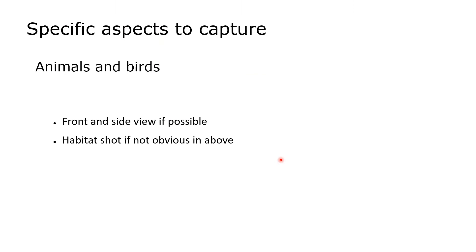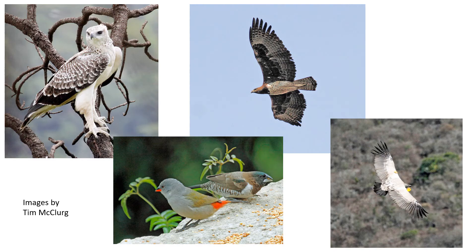For animals and birds, try to get a front and side view if possible — clearly not always possible as these things don't move to order — and maybe a habitat shot if not obvious. Here we have nice images of raptors and some garden birds. In this case you would want to split the observations so you have one for the waxbill and one for the mannikin. Each is a very clear observation leading easily to identification. Note that in one image there is a shot of a wing tag — this bird has been ringed, and if you can blow up the image you would be able to read the number on that tag and identify the individual from a database.